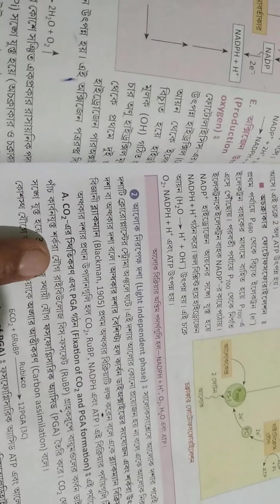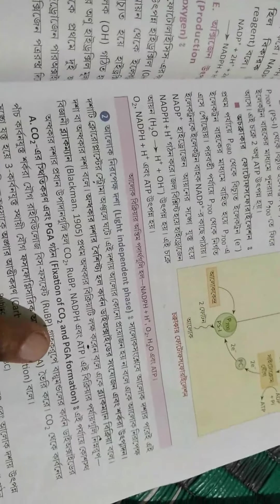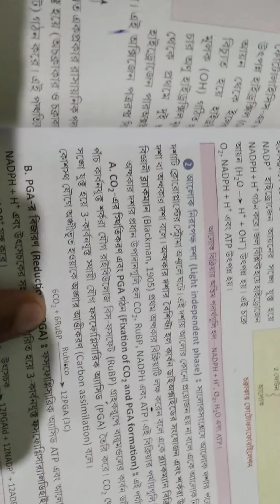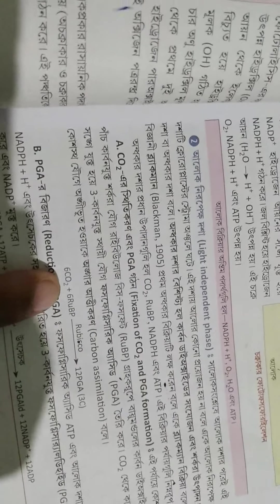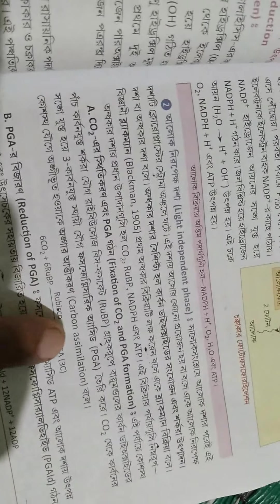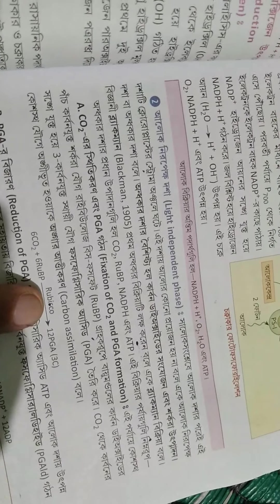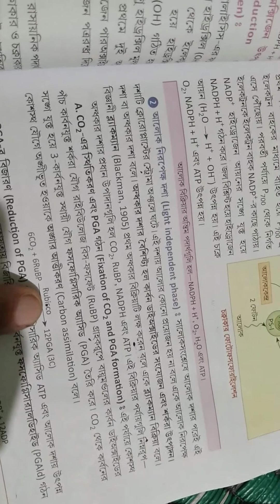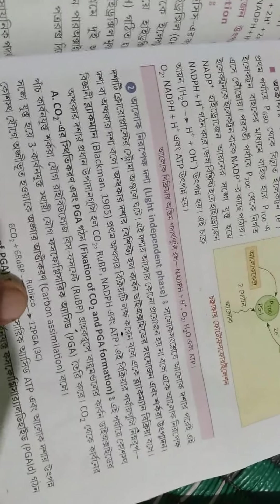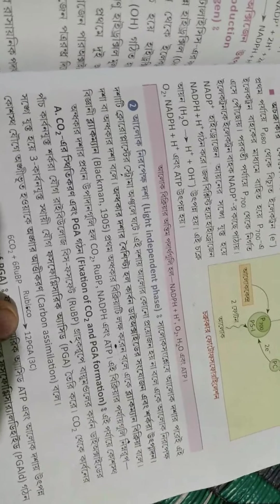First of all, at the very beginning of the reaction, there is fixation of carbon dioxide and PGA formation. Six molecules of carbon dioxide will be attached with six molecules of RuBP, by the help of RuBisCO. RuBisCO is a very important enzyme because it has carboxylase activity as well as oxygenase activity. When the carbon dioxide amount is enhanced, the carboxylase activity will be activated.